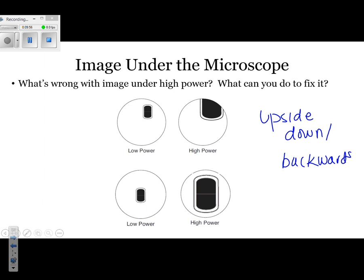Other things you need to know about when looking at something underneath the microscope is staining. Staining allows you to better see whatever specimen you're looking at. For example, if this image was not stained, you might see something less detailed — meaning you wouldn't be able to see the detail inside of the cell. That's it for relationships and biodiversity.